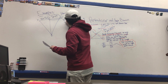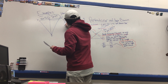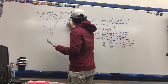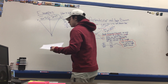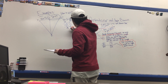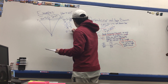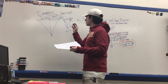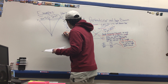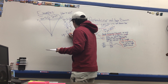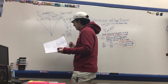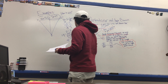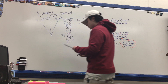We set 5n minus 2 equal to 2n plus 7 and solve: subtracting 2n from both sides gives 3n minus 2 equals 7. Adding 2 to both sides: 3n equals 9, so n equals 3. Plugging n into WY, which is 2n plus 7: 2 times 3 is 6, plus 7 gives us WY equals 13.